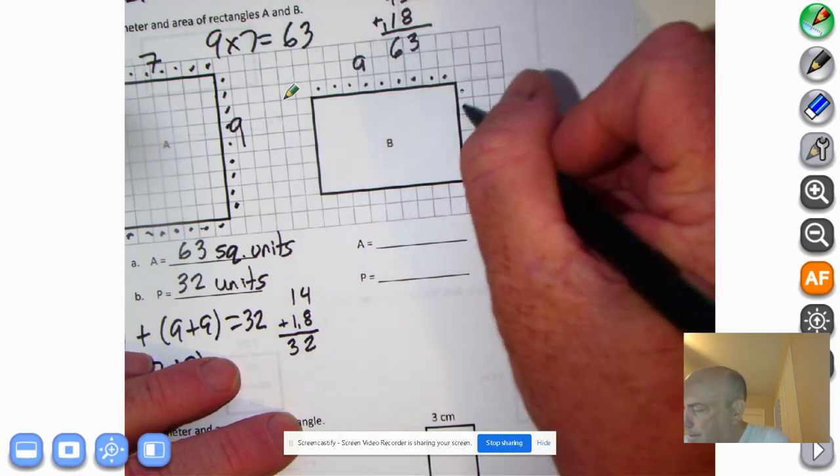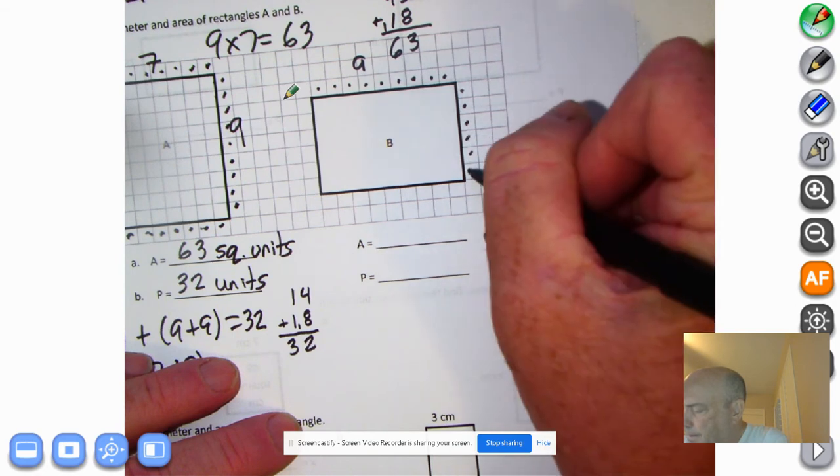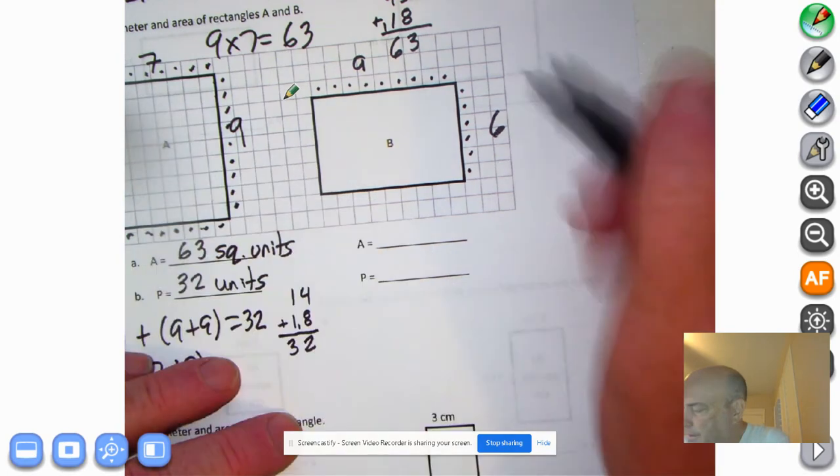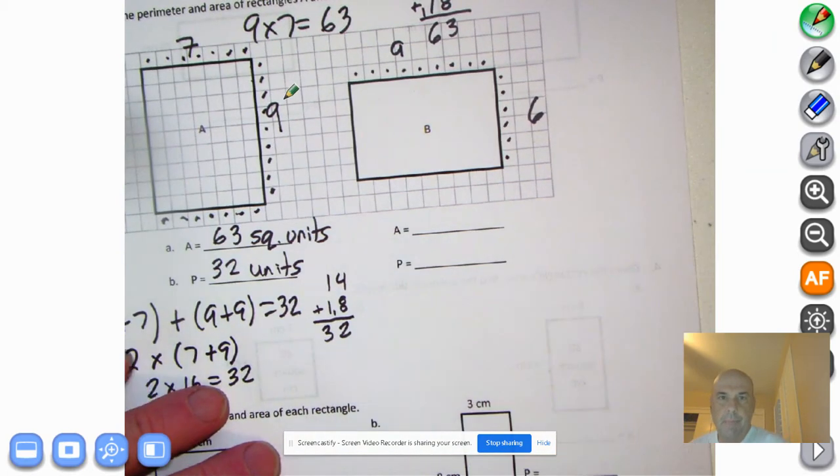We'll cut down here. One, two, three, four, five, six. Six units. It's kind of funny that you have seven over here and six here. So once again, let's think about area.